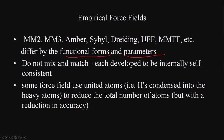Some force fields use united atoms, which means they condense hydrogen with heavy atoms to reduce the total number of atoms. For example, instead of putting H and carbon separately, they have a united atom that condenses H into the C with their own parameters. There is some reduction in accuracy, but the number of calculations reduces dramatically.